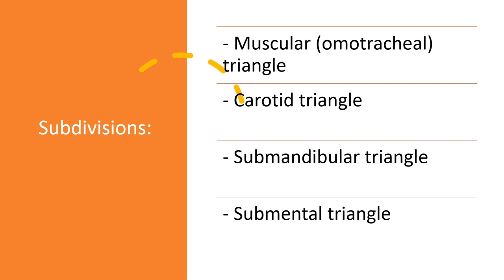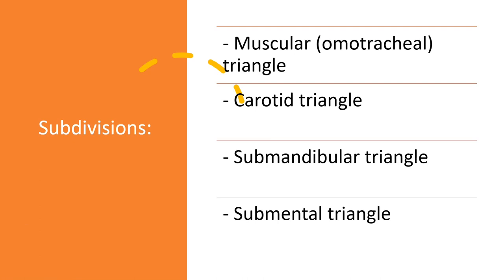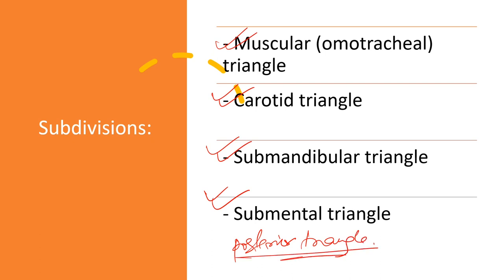What are the subdivisions of the anterior triangle? The subdivisions are: muscular triangle, carotid triangle, submandibular triangle, and submental triangle. In this video we will be discussing mostly about the posterior triangle, and in another video we will talk more about the anterior triangle.